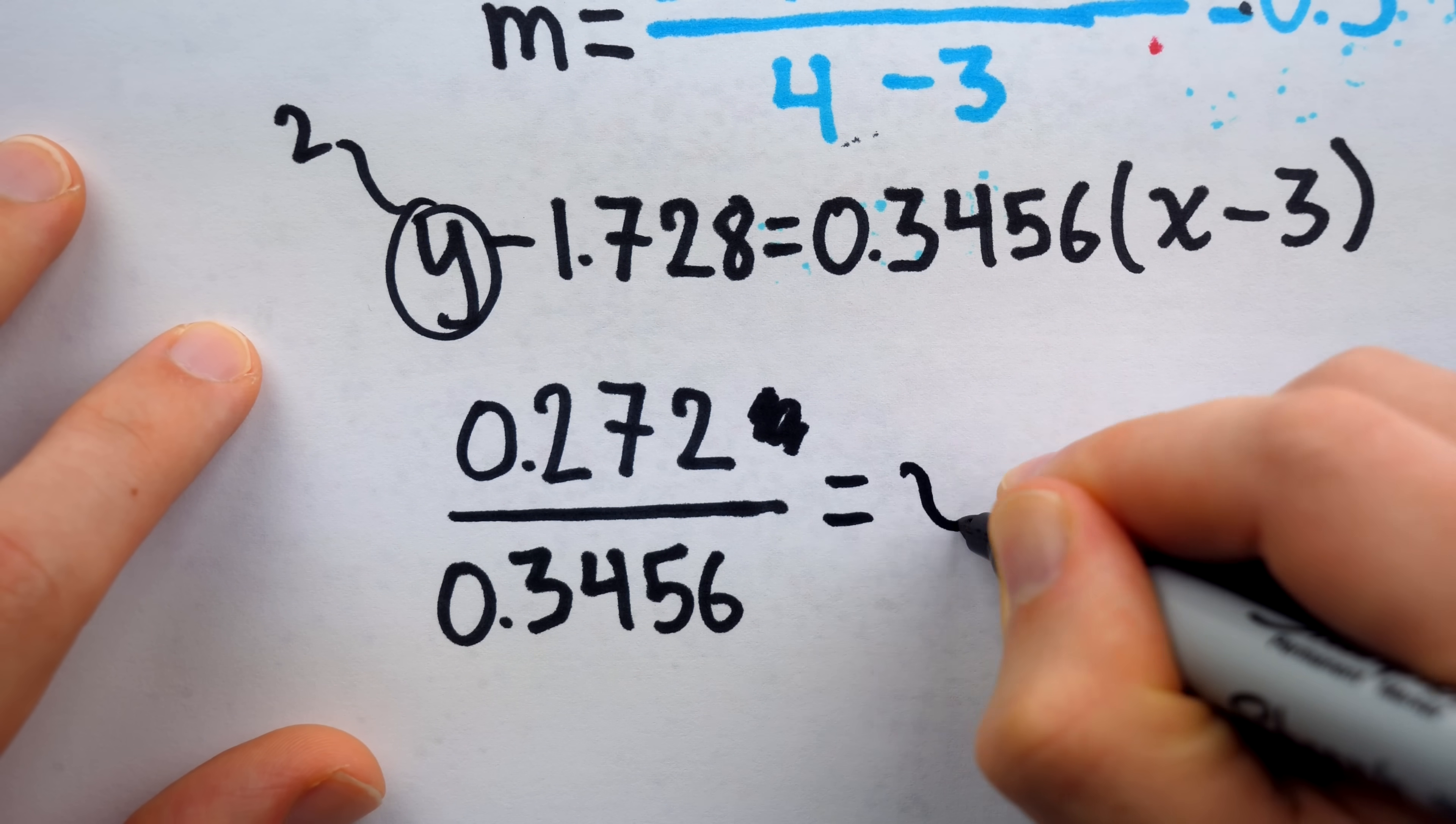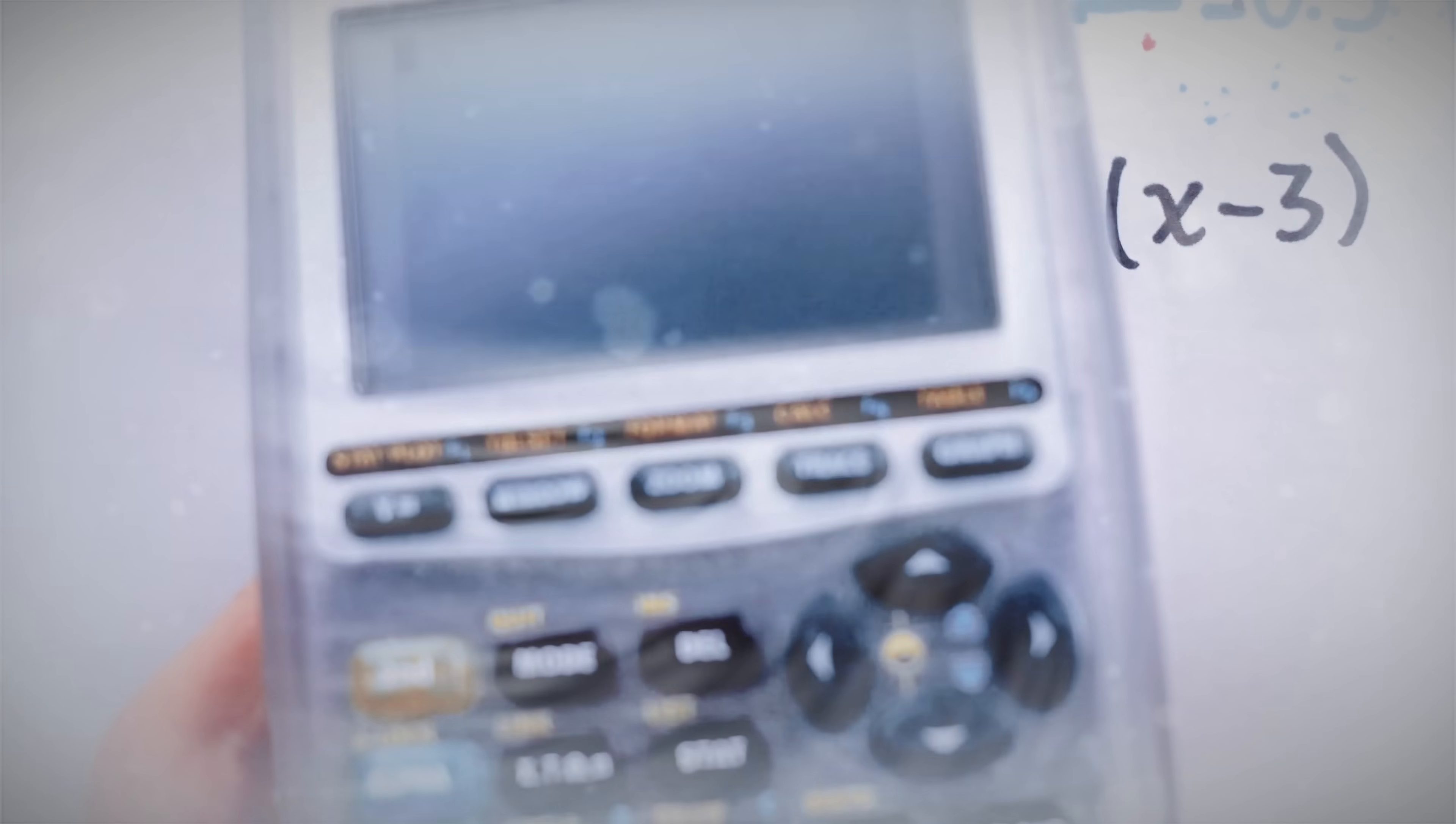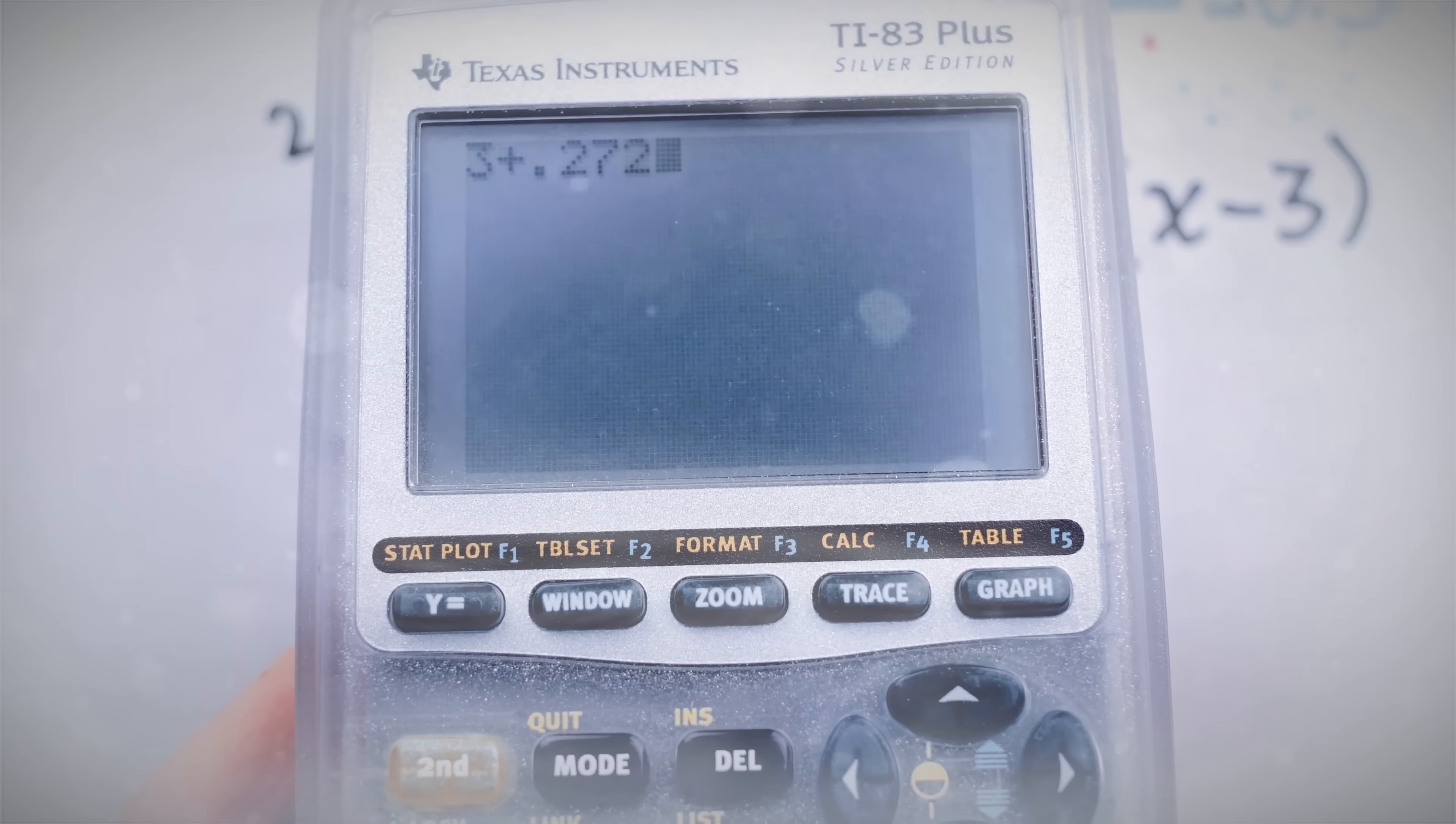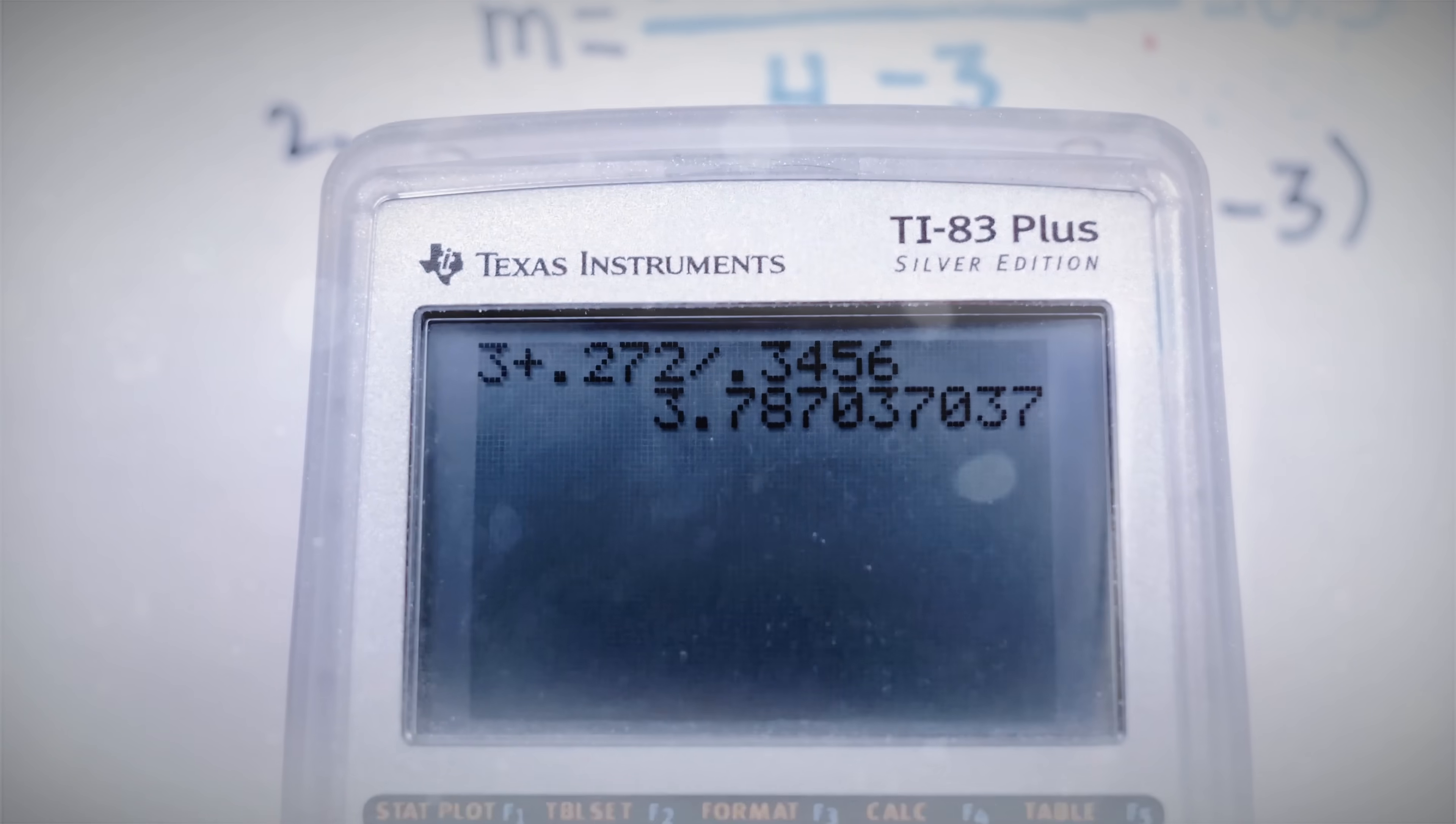This, of course, then is equal to x minus 3 since we divided this out. So to finish solving for x, we just need to add 3 to this. Once again, using my limited silver edition TI-83+, we have 3 plus 0.272 divided by 0.3456, producing an answer of 3.7870.